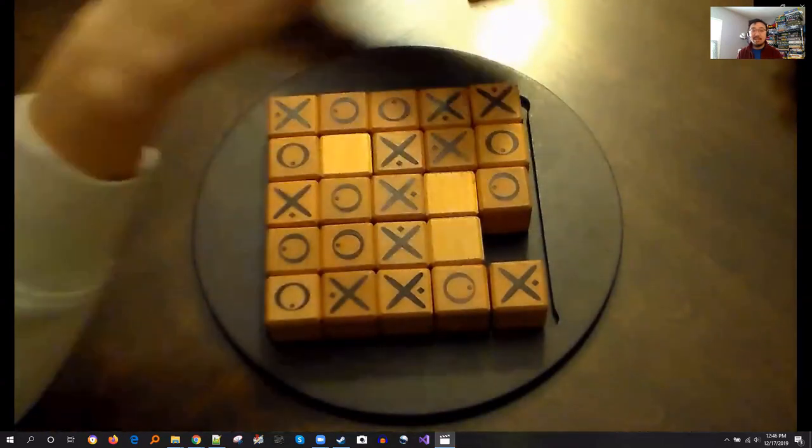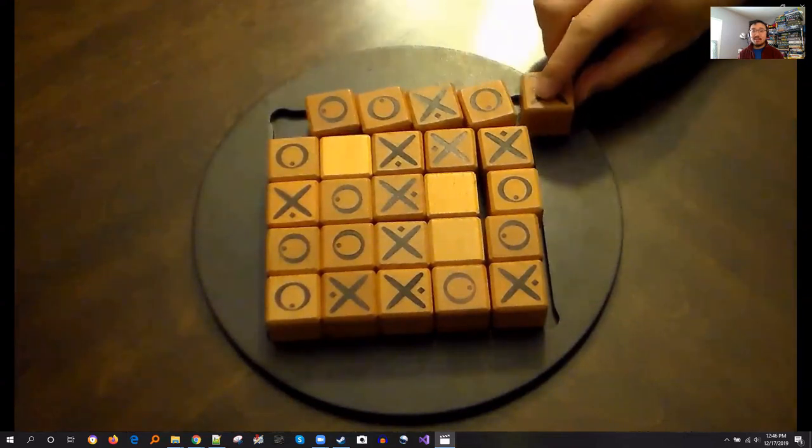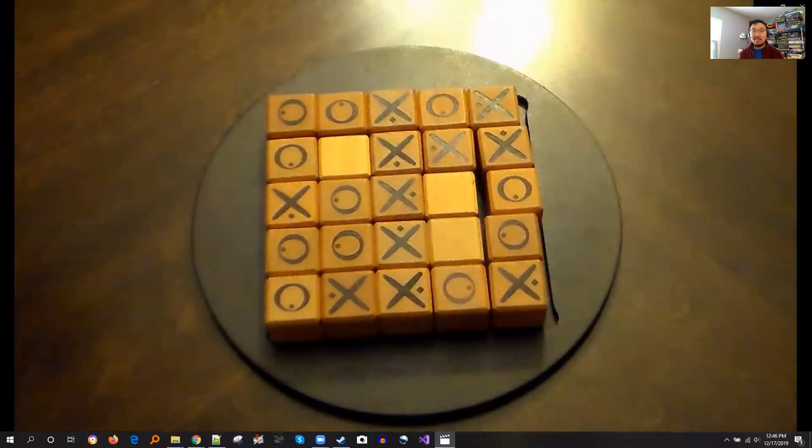Okay, so it looks like O tries to do something here, but fails to see that X has an avenue of winning right there.